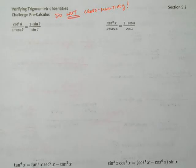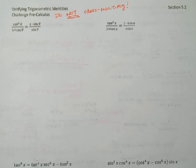We're verifying trigonometric identities here. We've run across a problem that looks pretty terrible — it's got fractions on both sides. Which one do we start with?